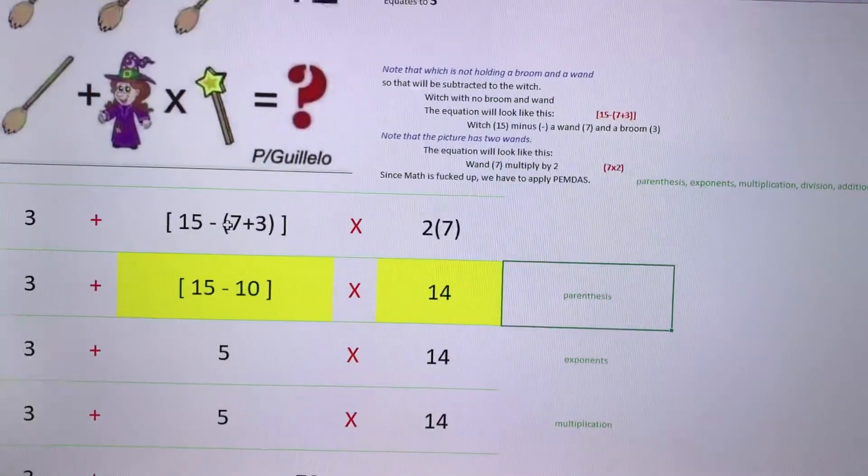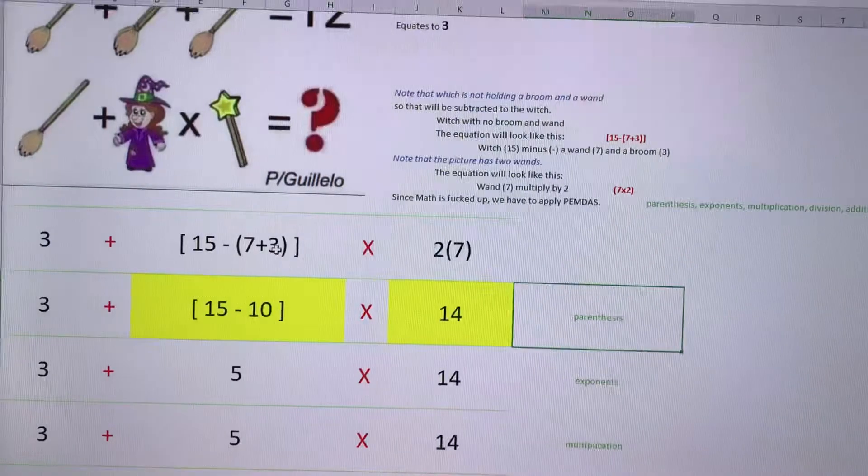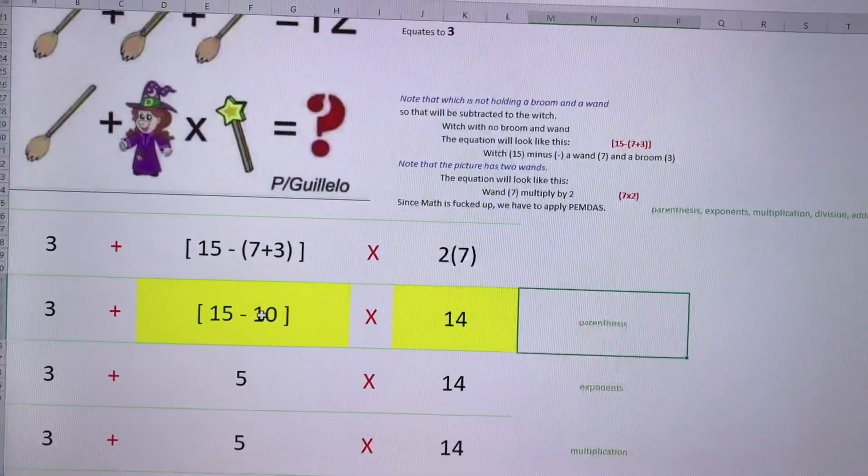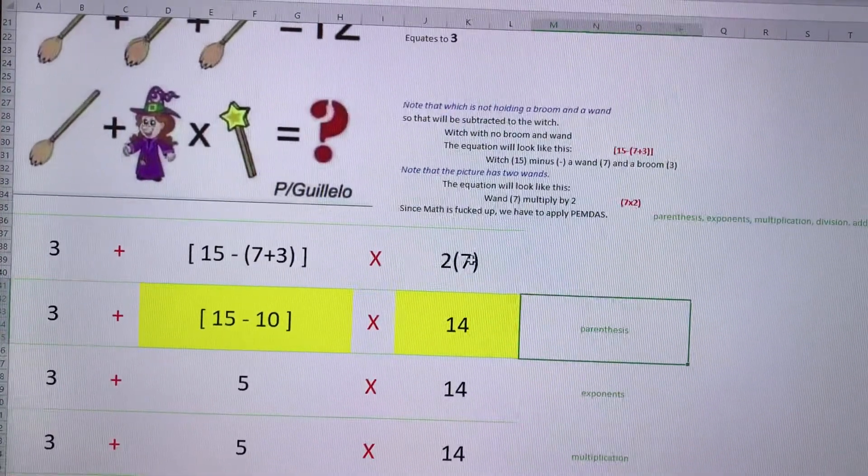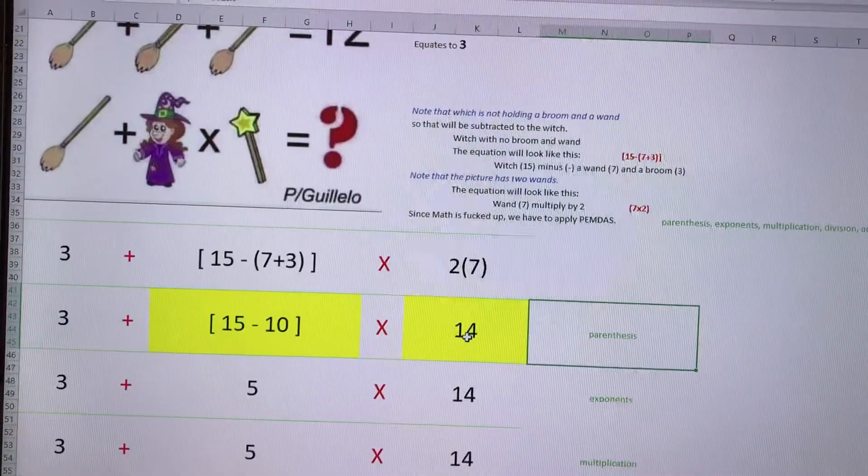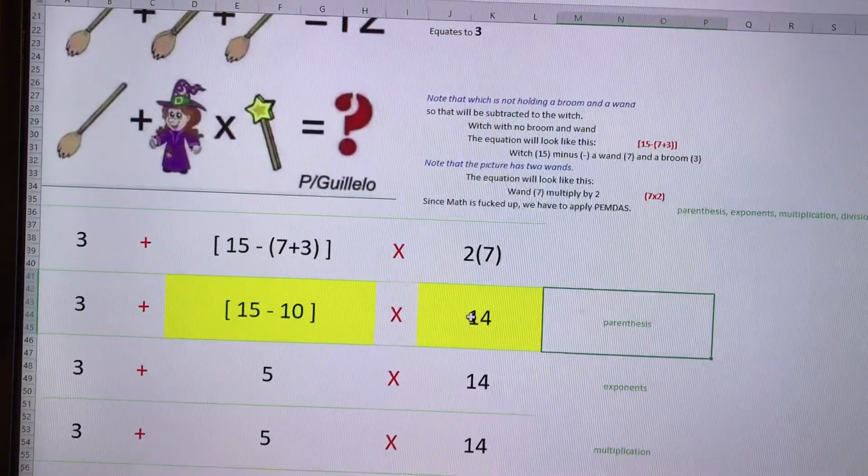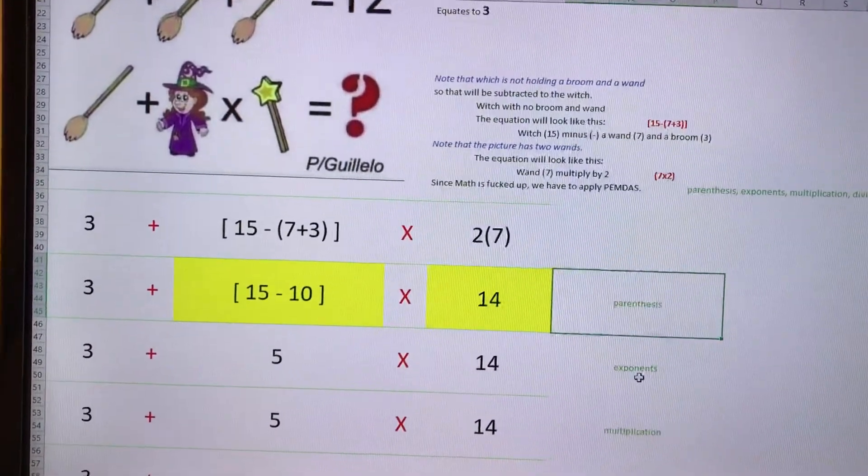Let me zoom out. So I did the parentheses right here. I removed the parentheses - 7 plus 3 is equal to 10. 7 times 2 or 2 times 7 is 14. So I did that. This is the second equation. And then next, exponent - there's nothing, there's no exponents.